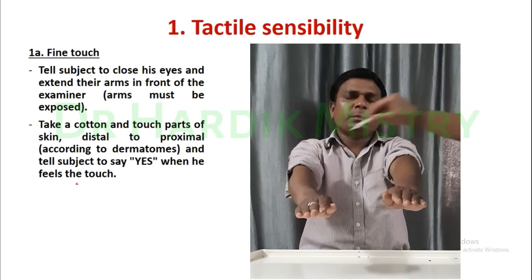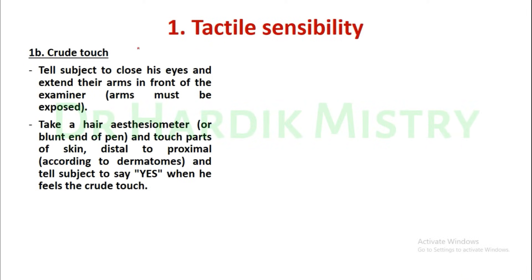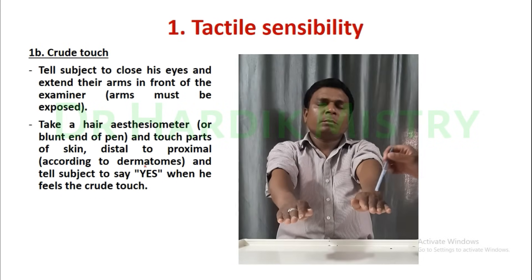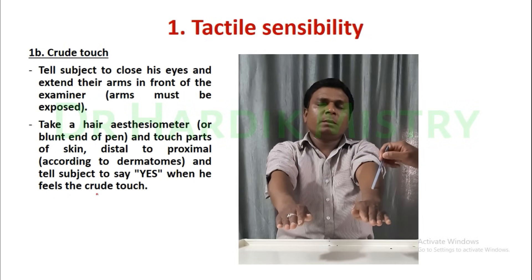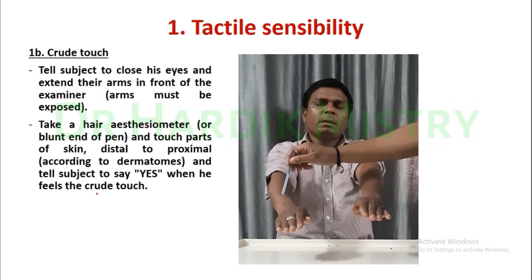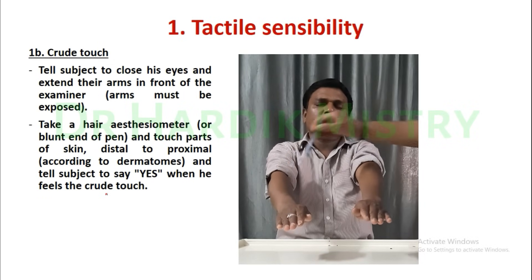Next, crude touch. Tell the subject to close his eyes and extend their arms in front of the examiner. Arms must be exposed. Take a hair esthesiometer or the blunt end of a pin and touch parts of the skin from distal to proximal part of the limb according to the dermatomes. Tell the subject to say yes when he feels the crude touch.